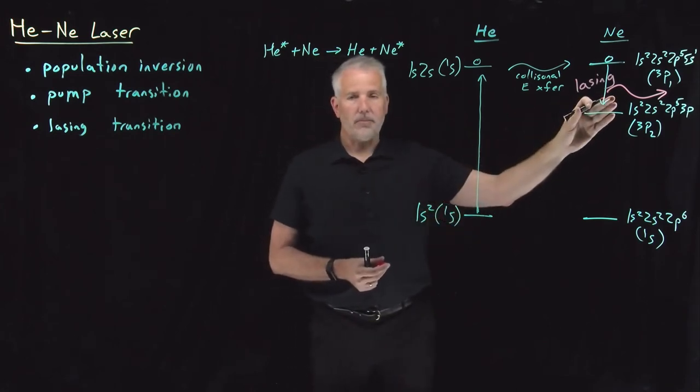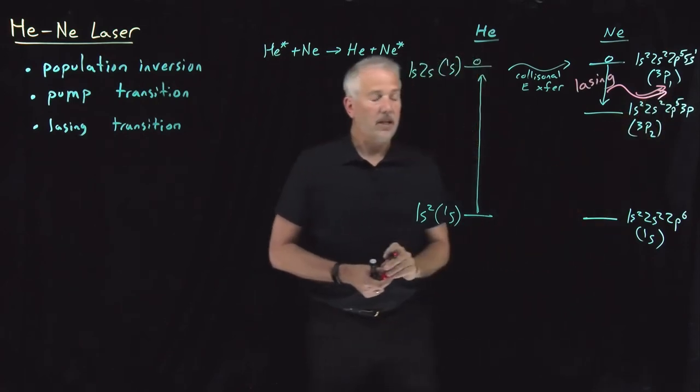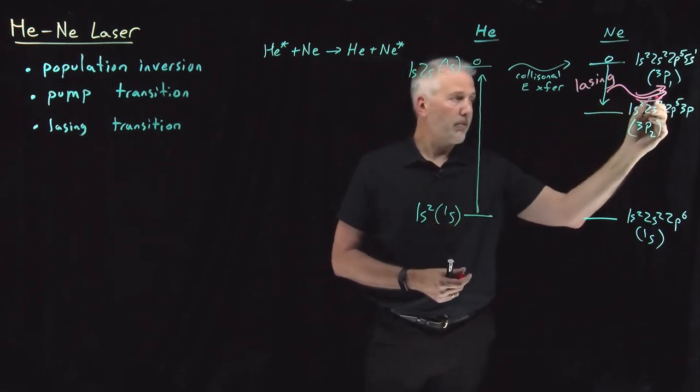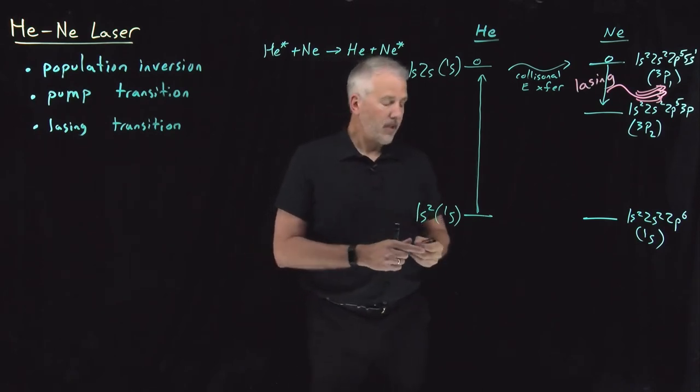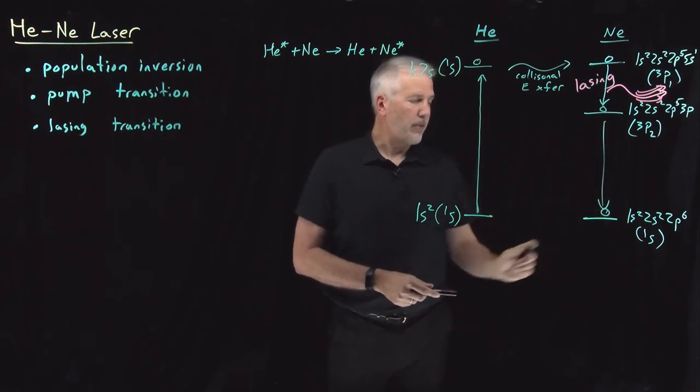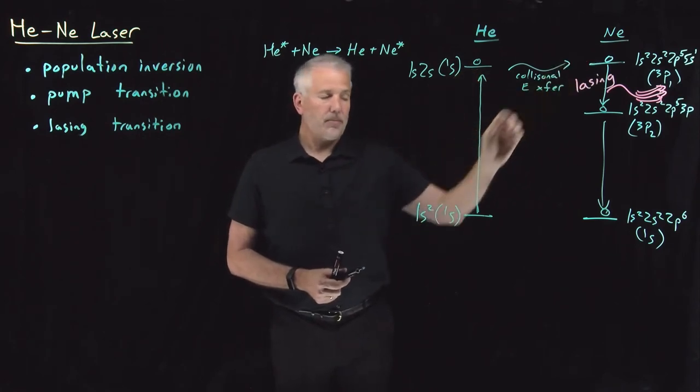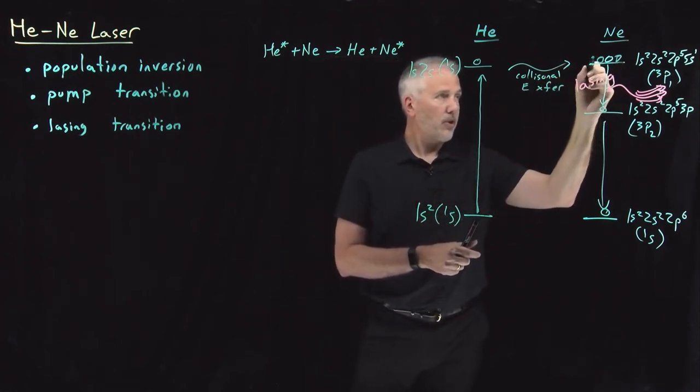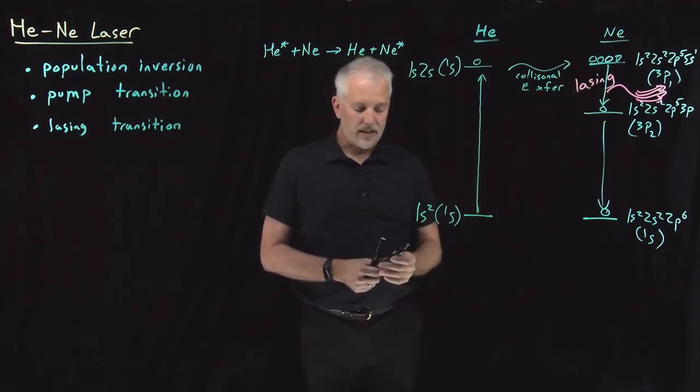So what happens is that photon, when it bumps into another molecule that's in the same excited state, will stimulate the emission of another photon. Those photons will bounce back and forth in our optical cavity, amplifying the light and generating more and more coherent photons with the same wavelength. After the molecule falls down here, it will eventually spontaneously fall back to the ground state. So we have this continuous source of excited state neon atoms via pumping and collisional energy transfer, maintaining a population inversion, more atoms in this upper state than in this state. And so we can have amplification of the light via this lasing transition.